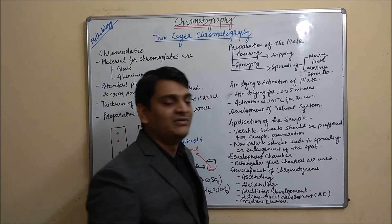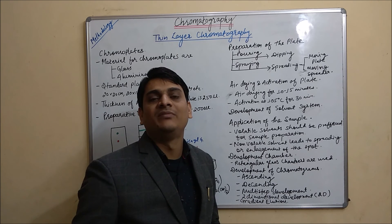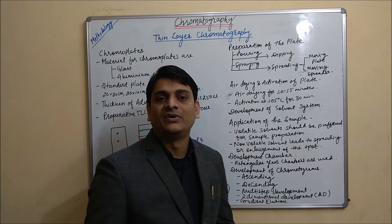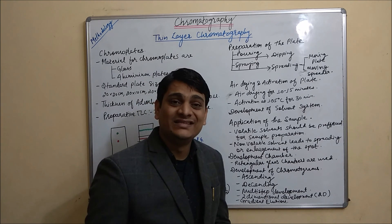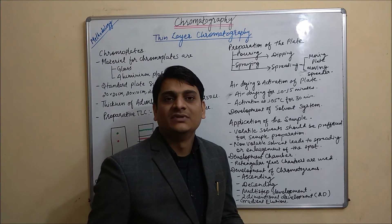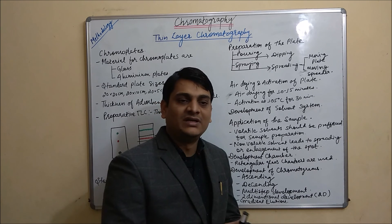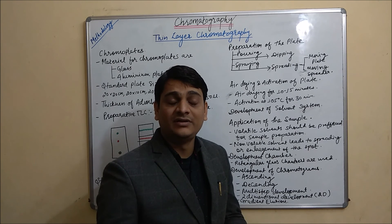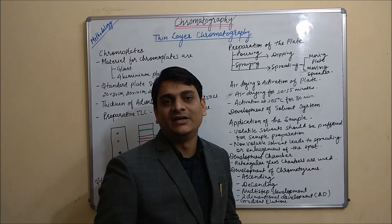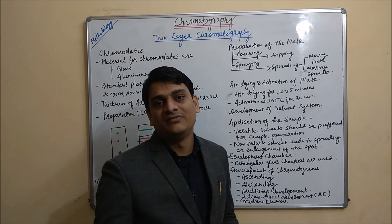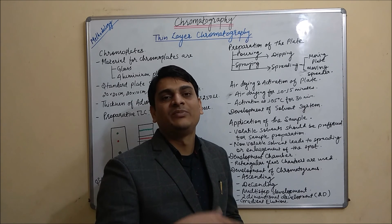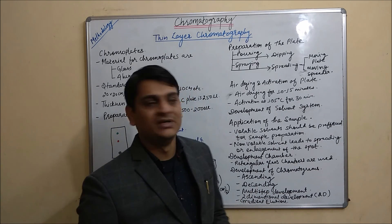Now coming to multi-step development. In multi-step development, generally we are using more than two solvent systems. For example, if we are having any compound which is not easily separable, first we will put our TLC plate in one solvent system, then remove that plate and put it in a second solvent system with either higher polarity or less polarity. Then separation takes place — this is multi-step solvent development.